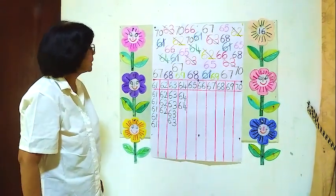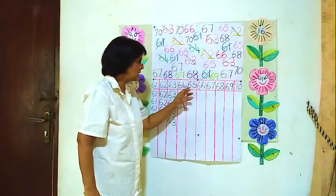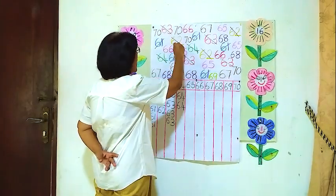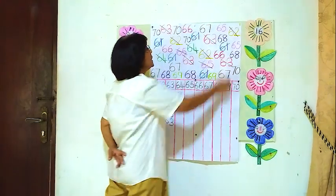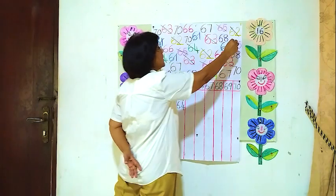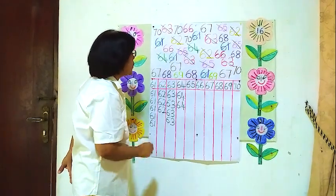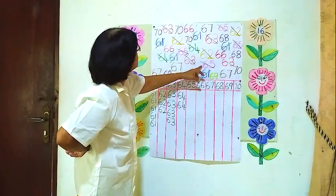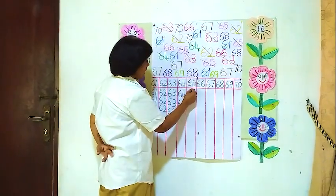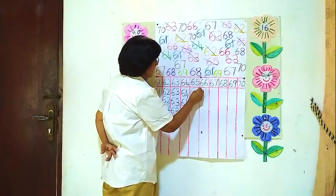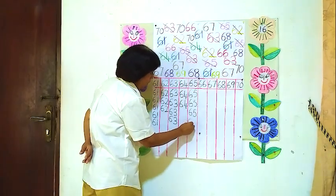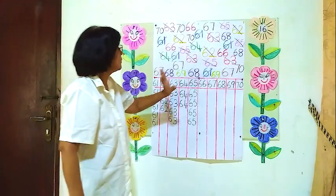Now we will go to the next number: 65. We will see how many 65's are here. Counting: 1, 2, 3, and another one — 4. Are there any more? Yes, another one here. Total: 1, 2, 3, 4 — 4 65's. We will put them into the 65 column: 1, 2, 3, 4 — 4 65's.